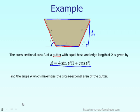The question is: find the angle theta that will maximize the cross-sectional area of the gutter. We have already solved this example using the golden section search method, but now we want to use the Newton method to solve this problem.